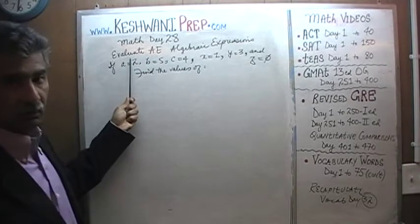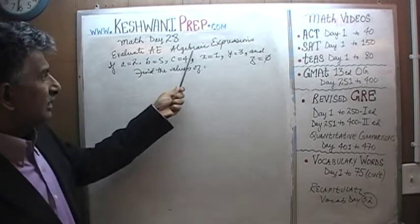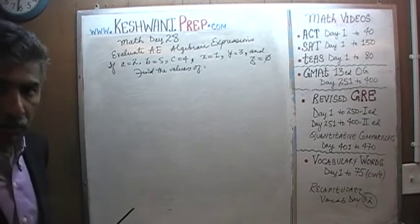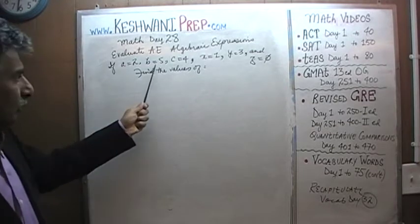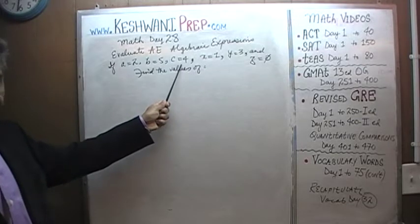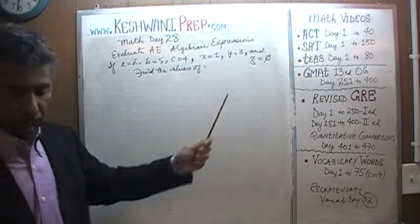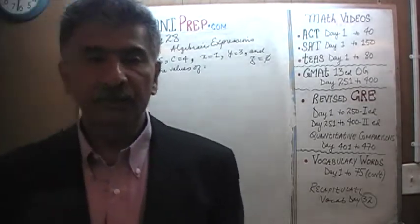Today we are going to evaluate some algebraic expressions. Here is the problem. We are being told that A equals 2, B equals 5, C equals 6, X is 1, Y equals 3, and Z happens to be a big fat 0.